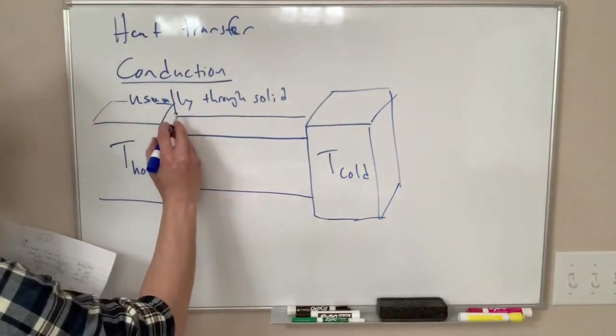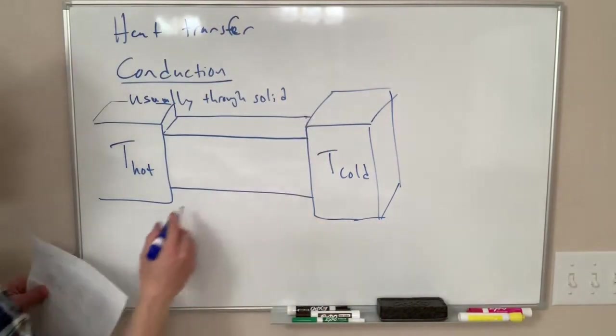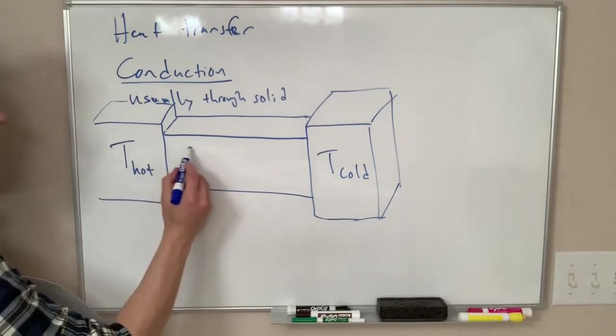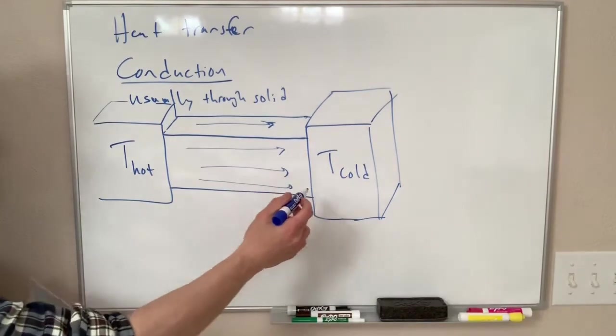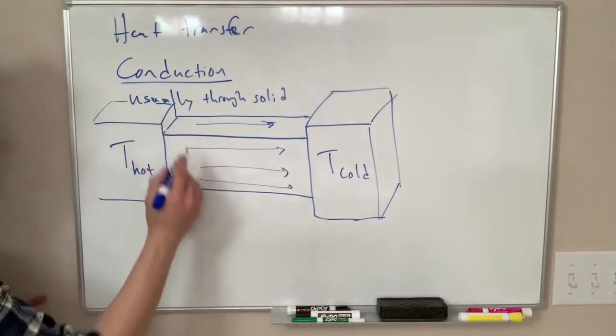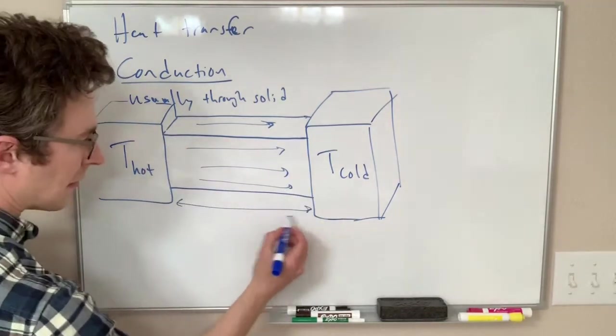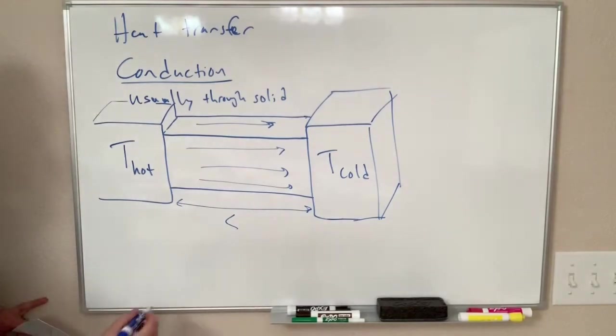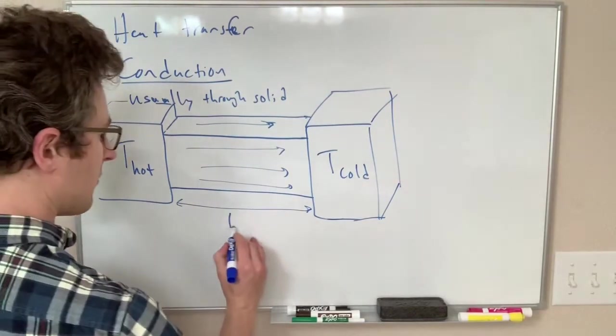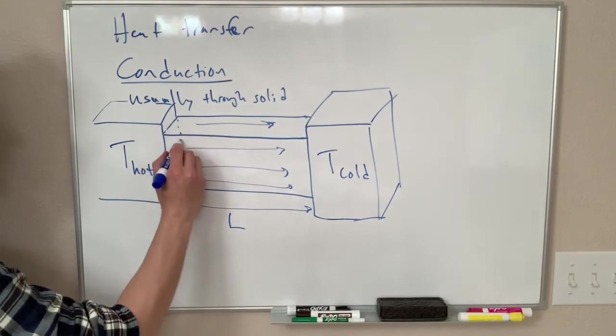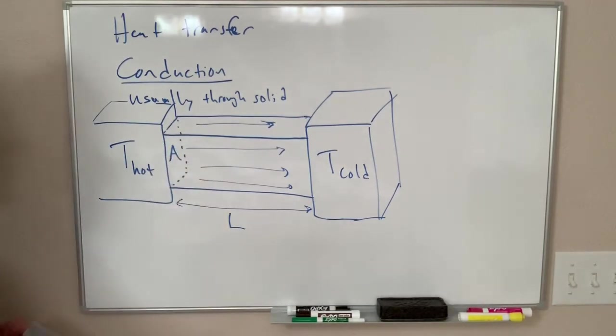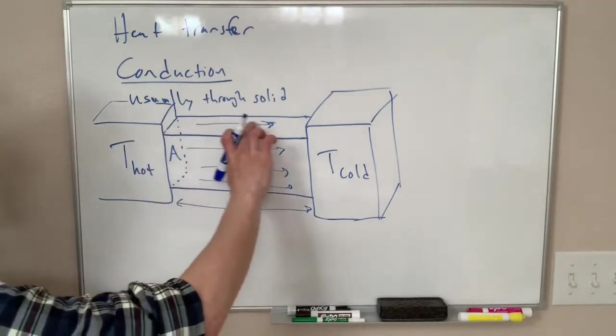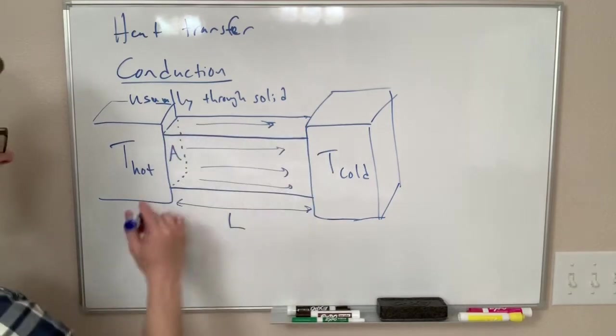So our conduction is the heat flow through this solid because of this temperature difference. Things that matter here are the length of this thing—I'll draw that vertically, that is an L—the cross-sectional area A of our thing that is conducting, and we're assuming that this is the same width all the way along it.